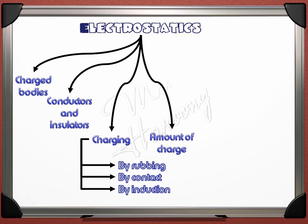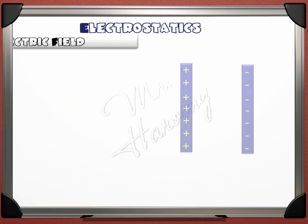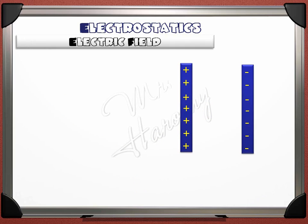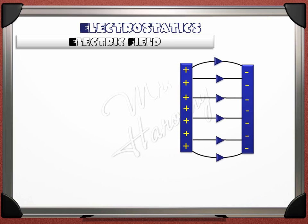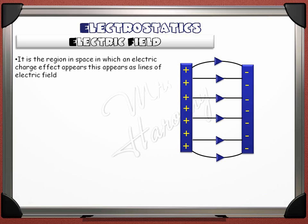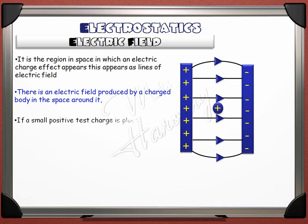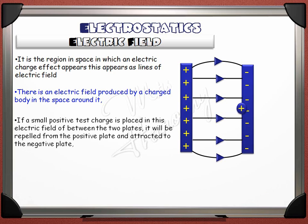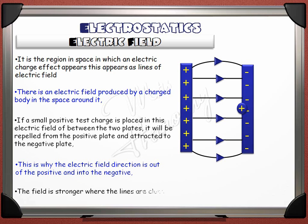Like the magnetic poles, electric charges have an area where their effect can be observed — this is the electric field. Consider two plates: a positive plate facing a negative plate. The electric field is represented by lines that have a direction. The electric field is defined as the region in space in which an electric charge effect appears, shown as lines of electric field. If a small positive test charge is placed in the field between the two plates, it will be repelled from the positive plate and attracted to the negative plate. This is why the electric field direction is out of the positive and into the negative. The field is stronger where the lines are closer together.